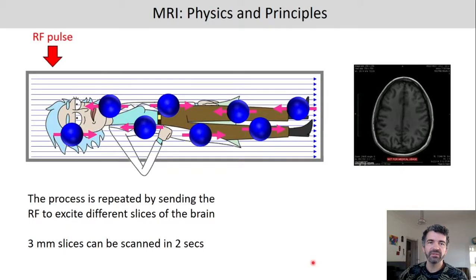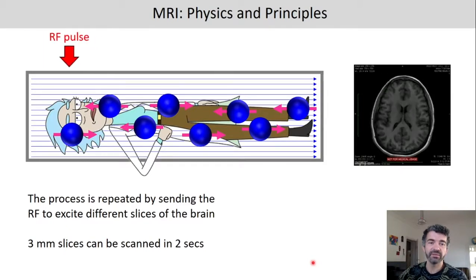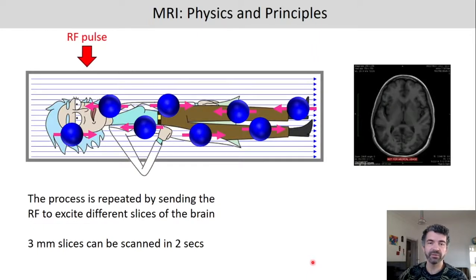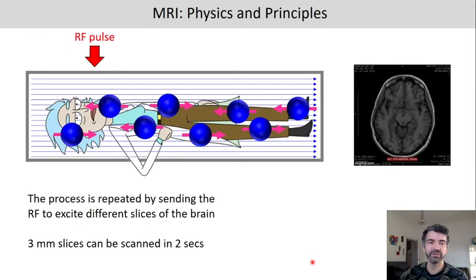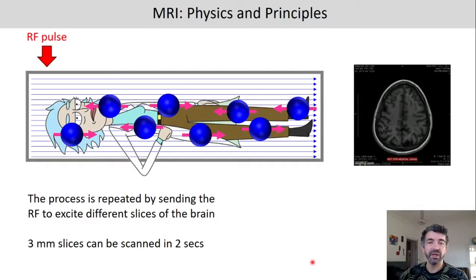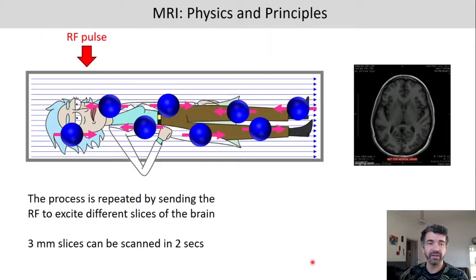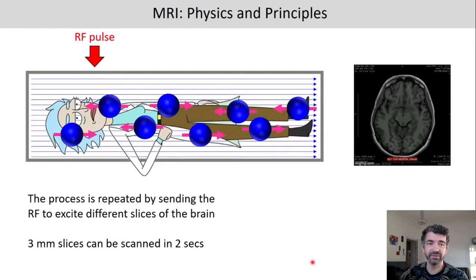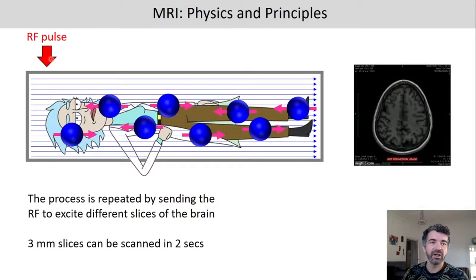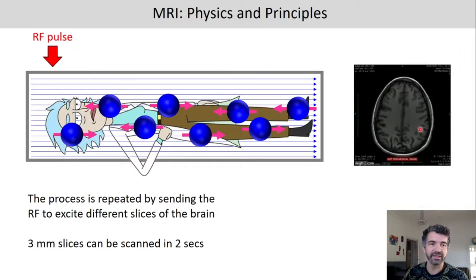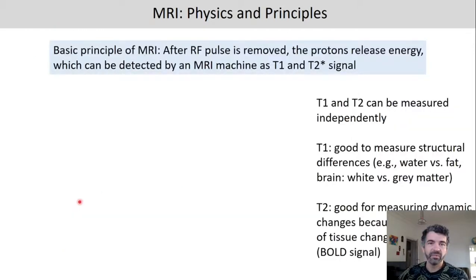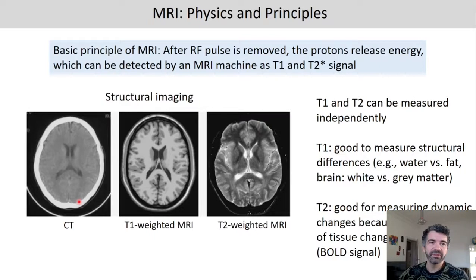So what we do in the scanner is, of course, we measure many times to get different slices of the body. If we're doing fMRI and we're interested in cognitive functions, we focus on the head, of course, but the MRI can also be applied to any other part of your body. For example, if you have a knee injury and want to have a look at how the knee looks on the inside, you can use MRI as well. Here you can see how the RF pulse is applied to different parts of the brain and then how we get different slices here. The basic principle of fMRI or MRI is that after the RF pulse is removed, the protons release energy, which can then be detected as two signals, as T1 or as T2.